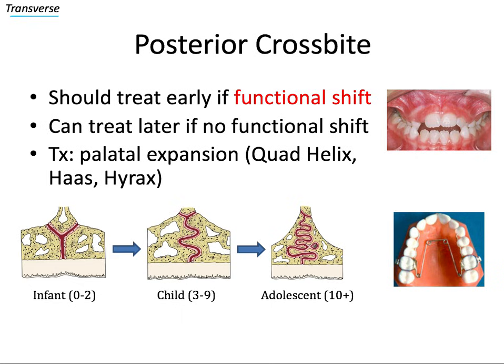Doing this treatment improves the oral environment, reduces complexity of later treatment if we avoid skeletal asymmetries, and it's easier to do early on when the mid-palatal suture is less interdigitated. For these reasons, palatal expansion is a very common and logical phase one treatment plan, and we can do that with a quad helix appliance shown here, and other expanders like the Haas and Hyrax. We'll talk about all of these appliances in much more detail in the next video on orthodontic appliances.